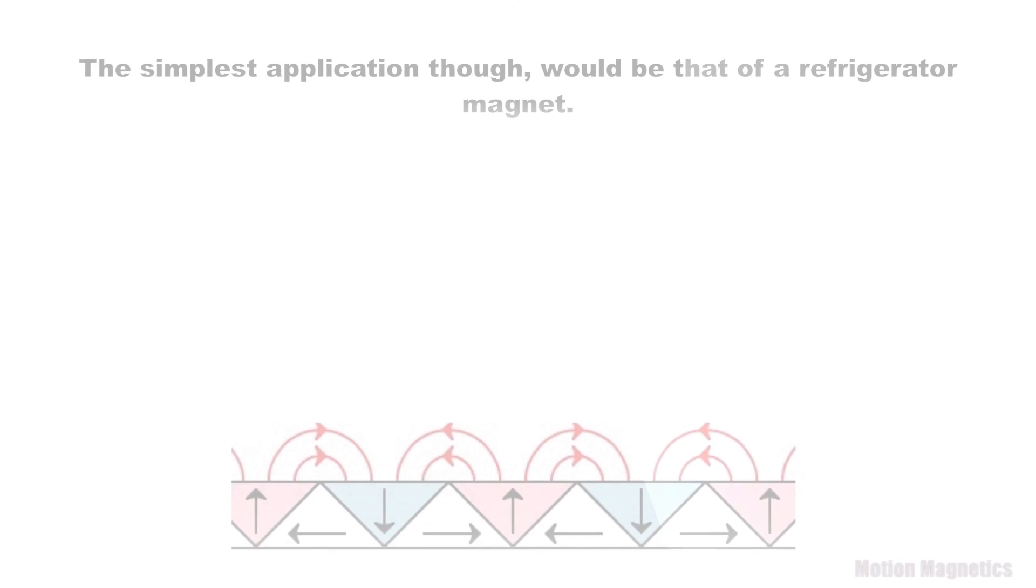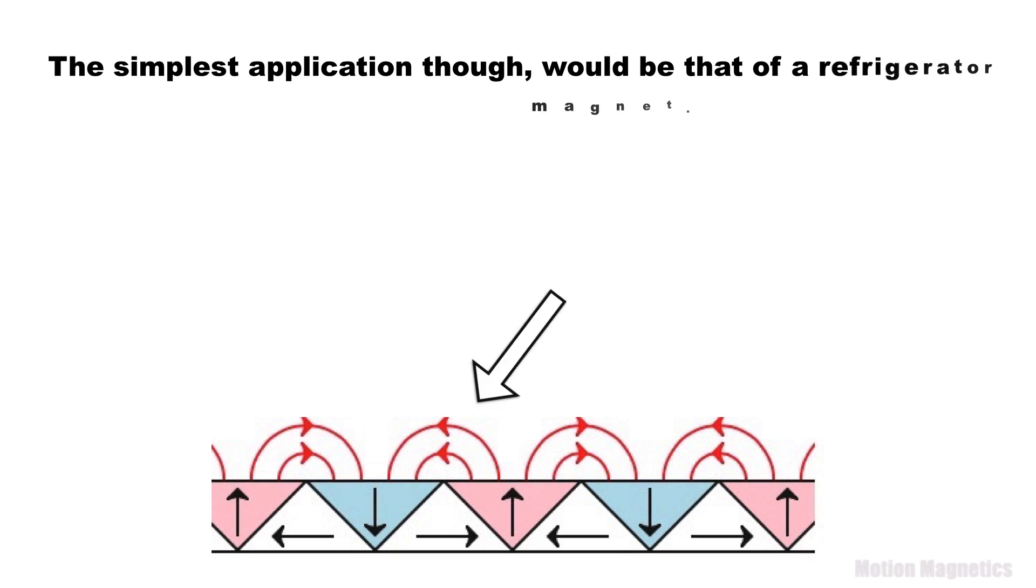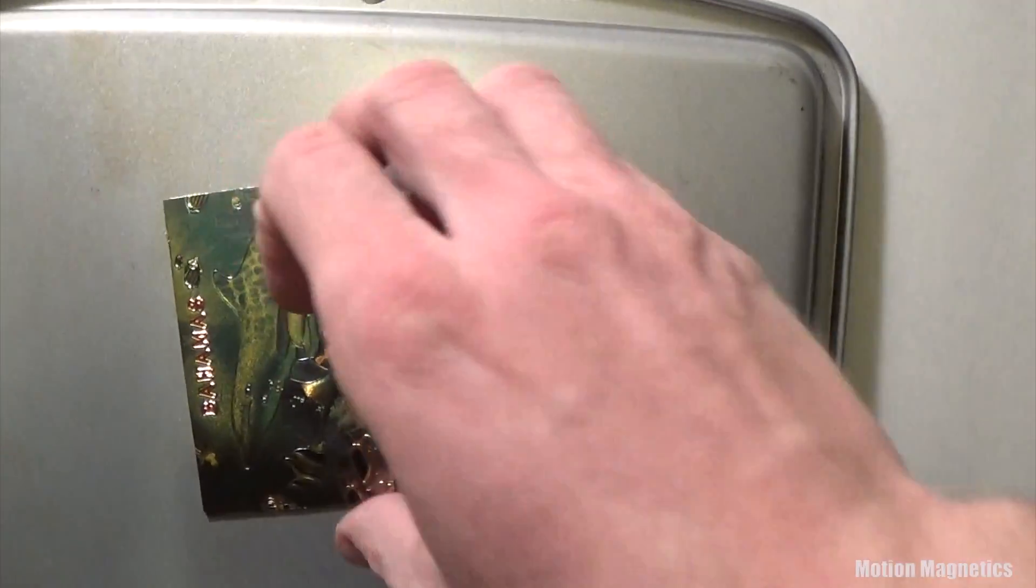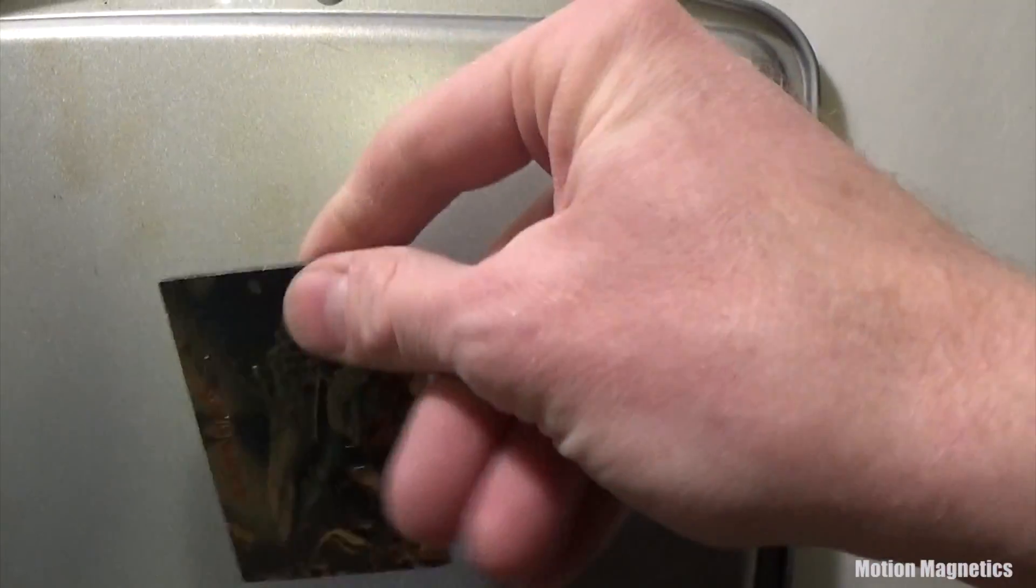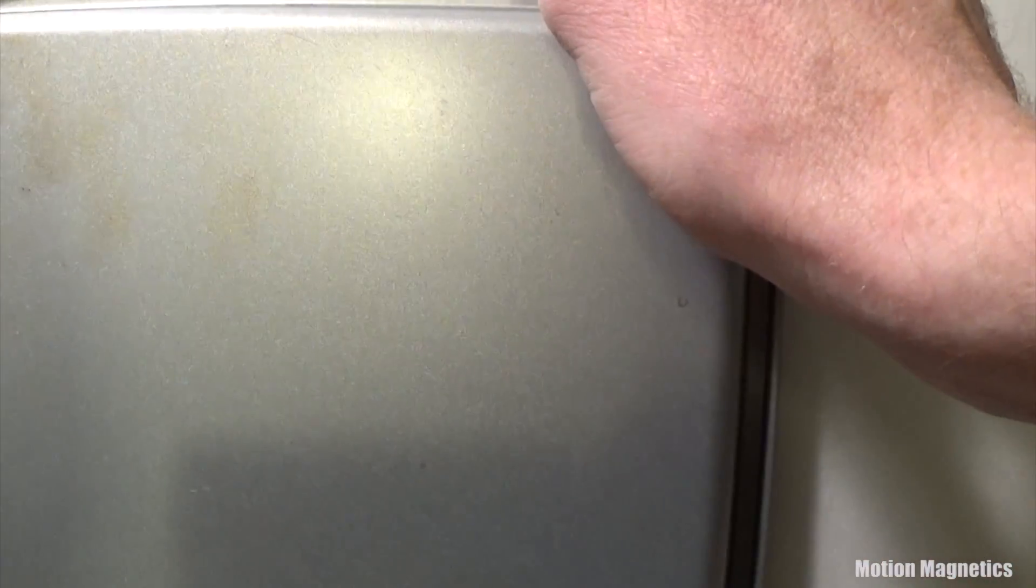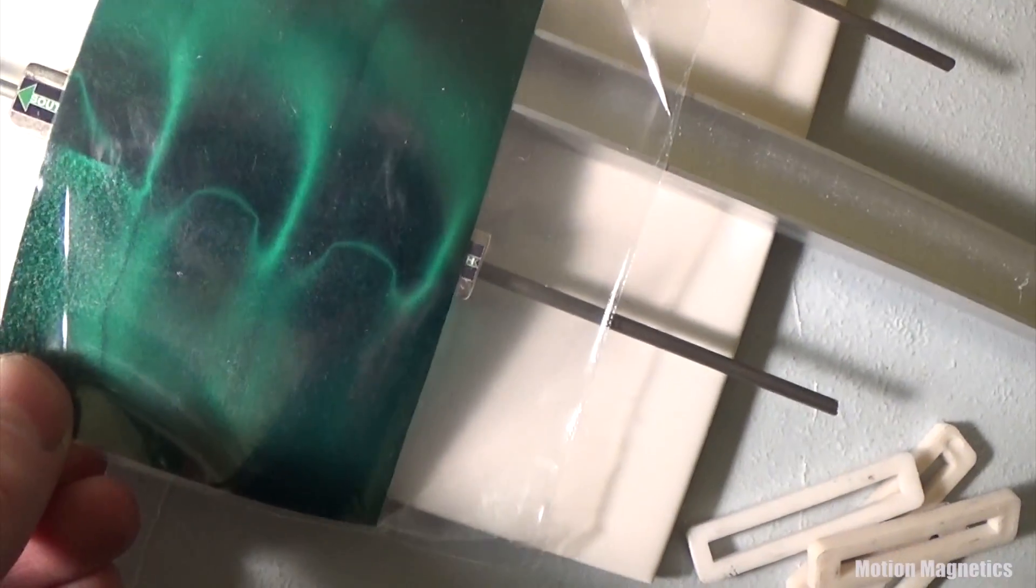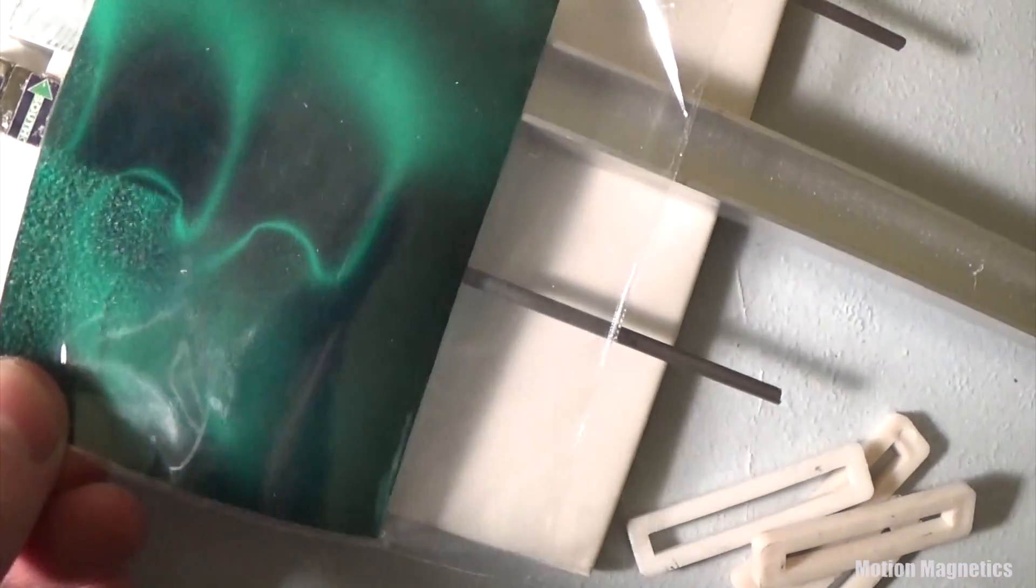The simplest application would be that of a refrigerator magnet. The fact that your refrigerator magnets are made of Halbach Arrays is why they stick to your refrigerator when you place them with the printed side showing. This is the side that has augmented magnetic field cycles. And they fall right off if you turn them around to the magnetically canceled side.